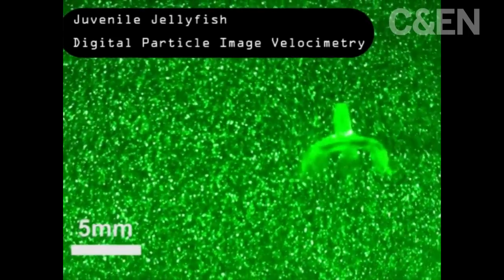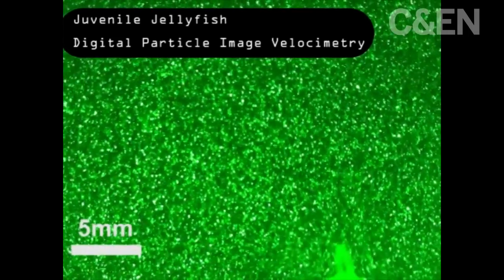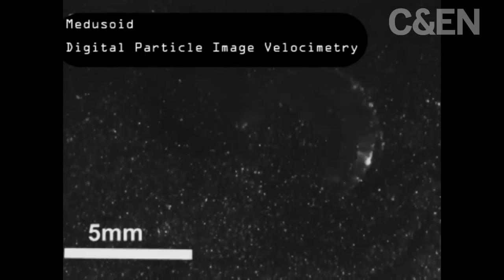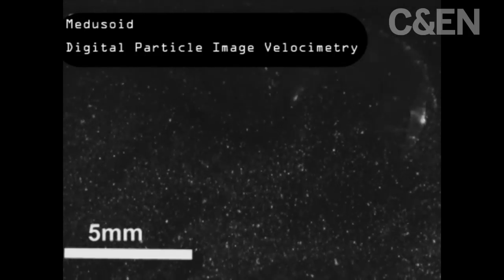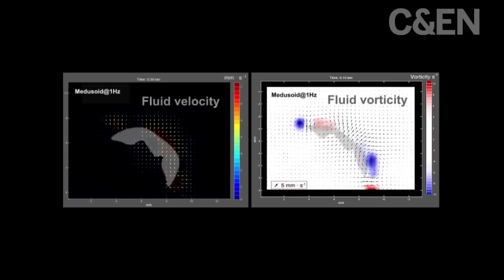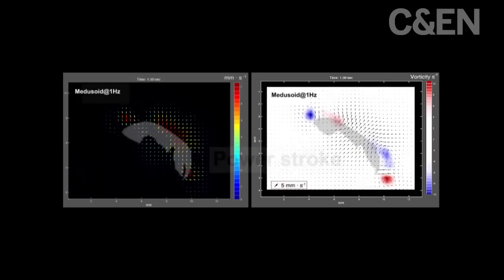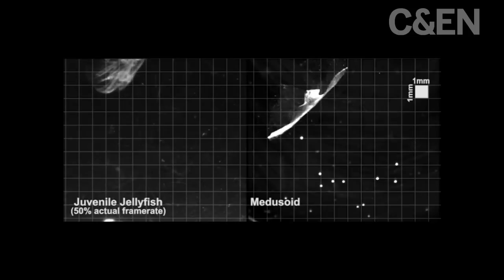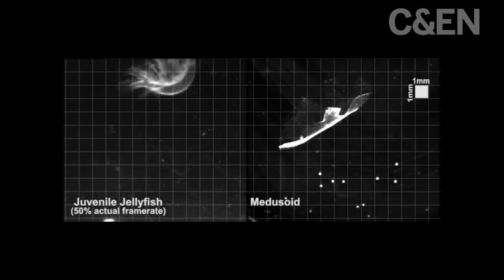To optimize their final design, the researchers mapped a real jellyfish's swim stroke with a technique called digital particle image velocimetry. The data they collected was inputted into a computer model, which eventually helped them make the ideal jellyfish mimic. Naroth continues: So in this video, we show a comparison of the real jellyfish.